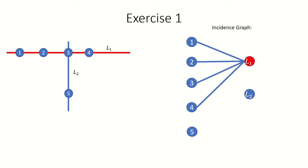Next, line L₂ is incident to points 3 and 5, so vertex L₂ is adjacent to vertices 3 and 5 in the incidence graph. This is our result.